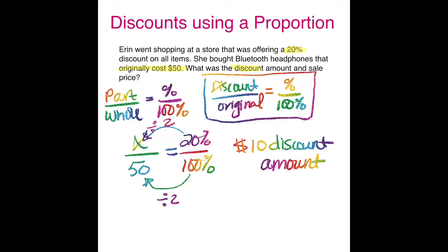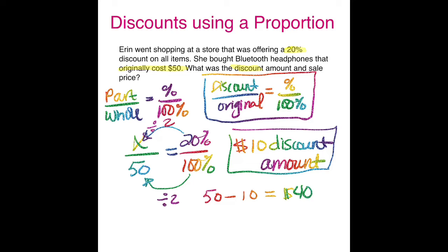So $10 is my discount amount — that's the answer to the first part of the question, and I'll box that. For the second part, I need to find the sale price. Discounts are amounts taken away, so I take my original price of $50 and subtract the discount of $10, giving me a sale price of $40. I'll box that as well.